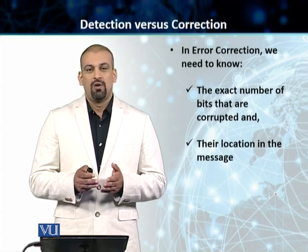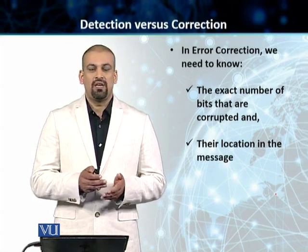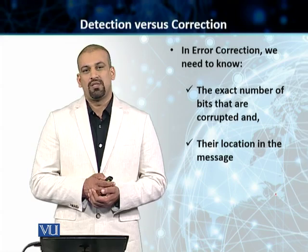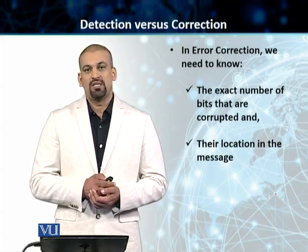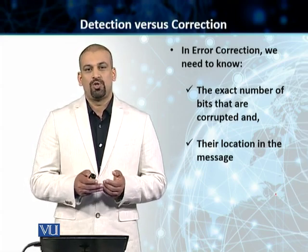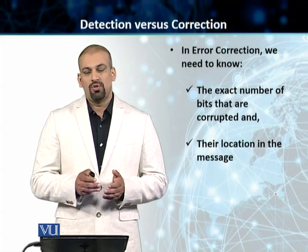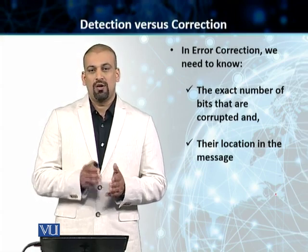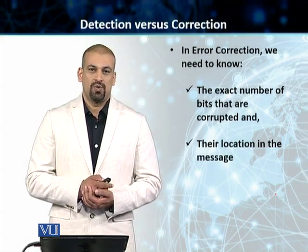Consider what it would be like if we need to find 100 errors in about 1,000 bits, or 5 errors or 10 errors in about 1,000 bits. The task is humongous. The correcting mechanism needs to be very sophisticated, and it needs to ensure that the exact location of these bits is known to the receiver — and not only that, the correction mechanism must be able to find those locations and fix those errors as well.